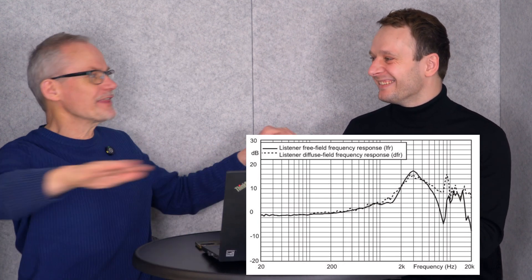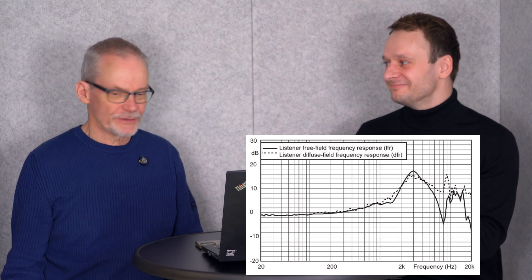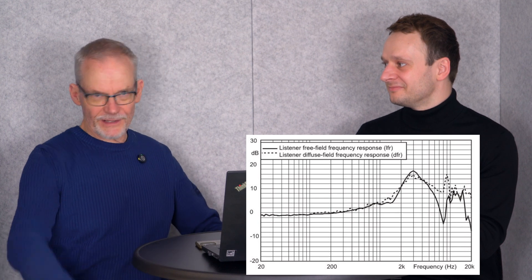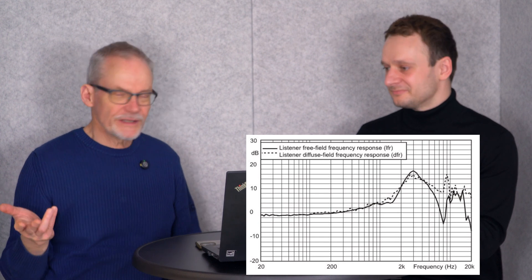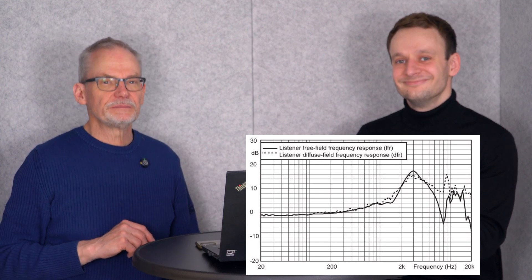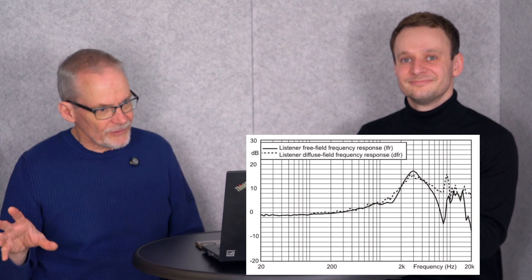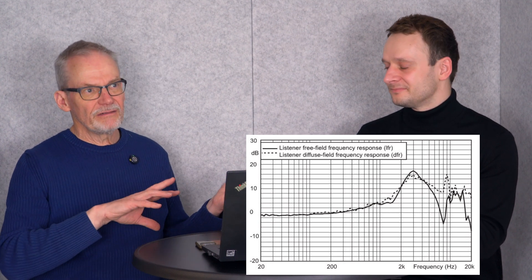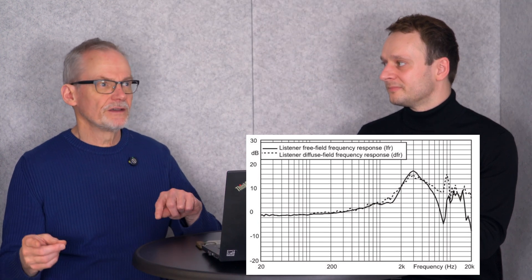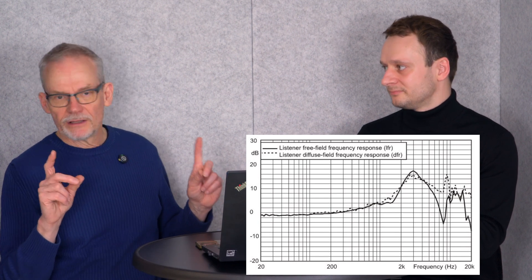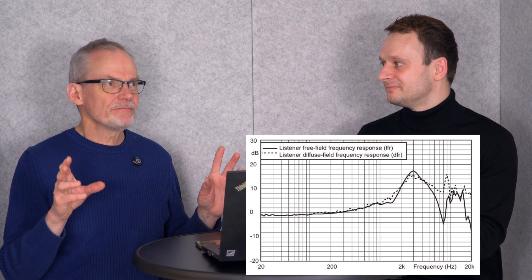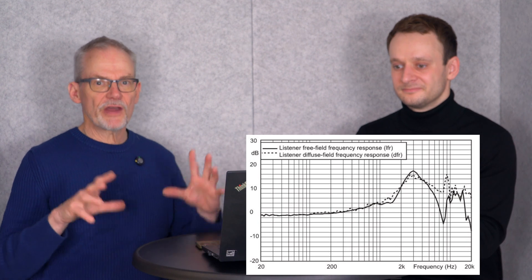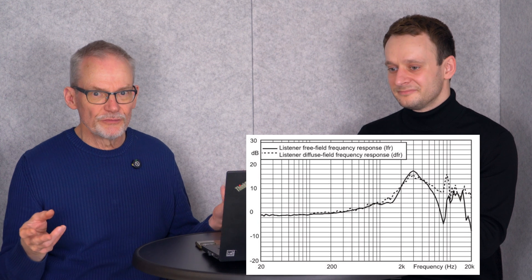So that sounded much better already — more natural depending on the recording — but it was not the real thing. That was more in the 60s and 70s. Then in the 80s, something new came up. Look now at the dashed curve — that was called the diffuse field frequency response. That was developed because you're not in a free field when you're listening to music with loudspeakers.